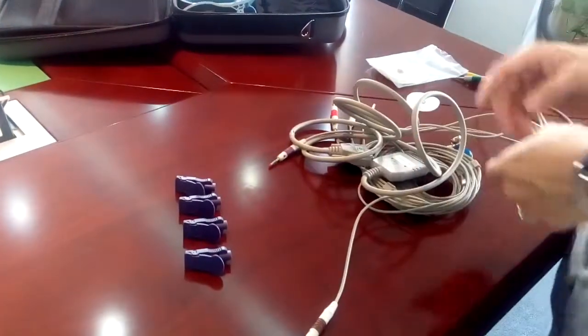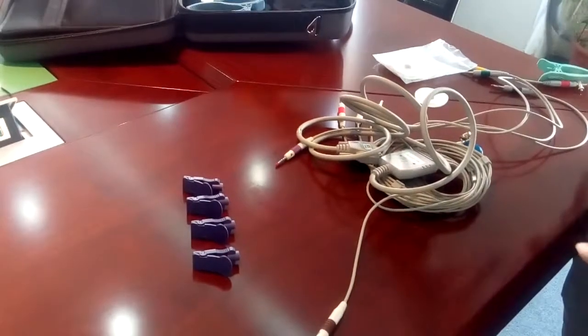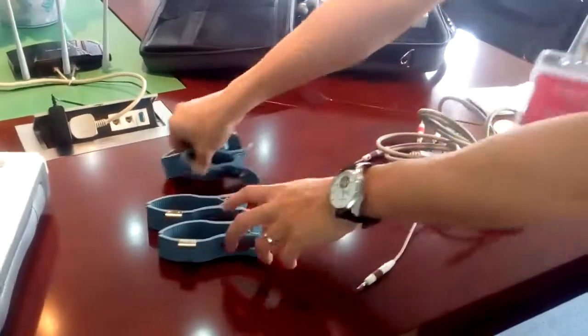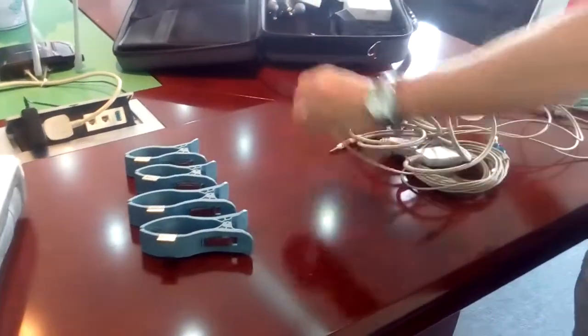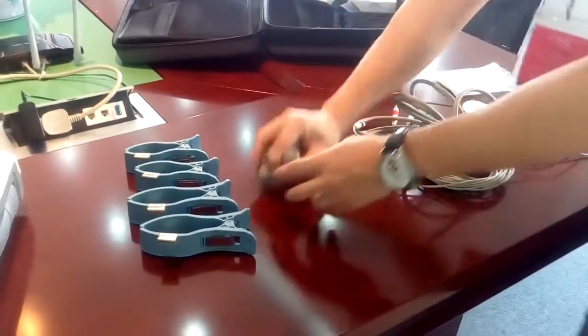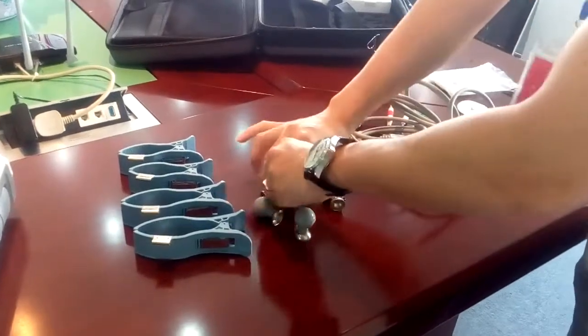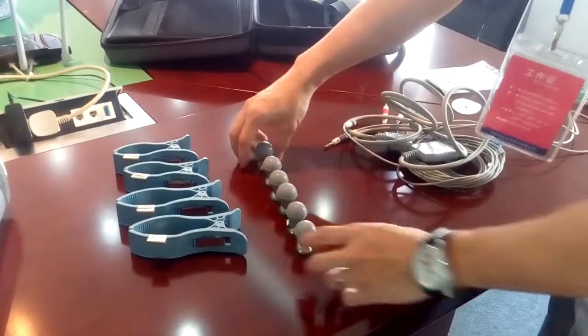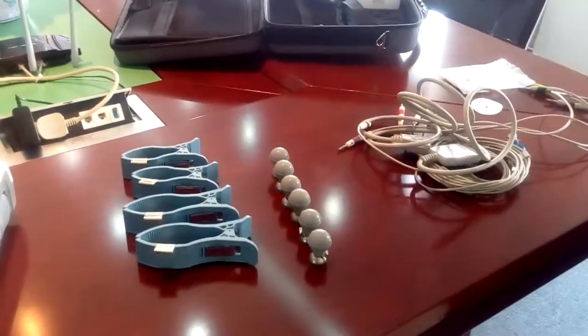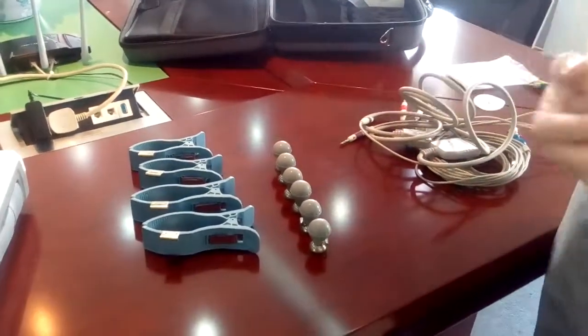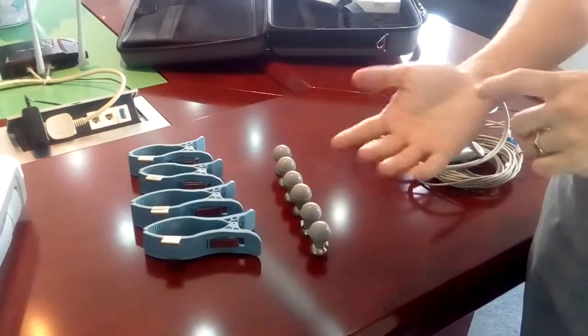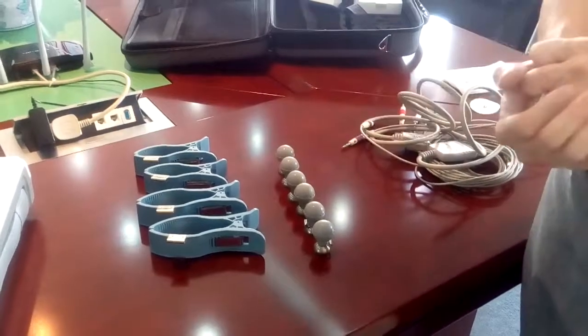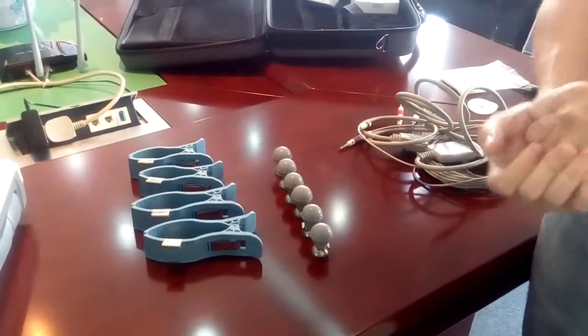However, when you purchase the ECG machine from CareWell, we only include the adult accessories: these four clamps and six adult suction electrodes. If you want to cover the three different patients—adult, neonates, and pediatrics—you have to buy different accessories from our company. Thank you very much.